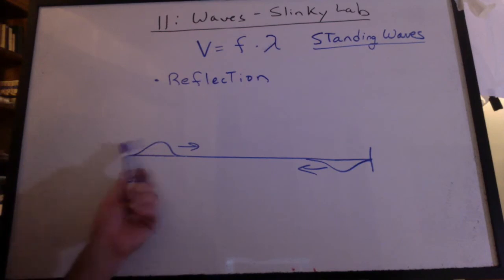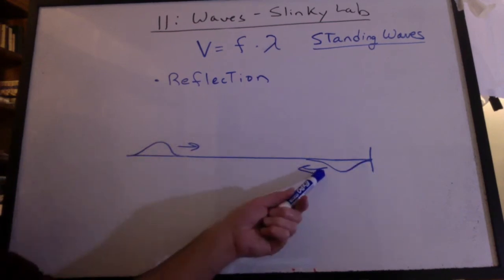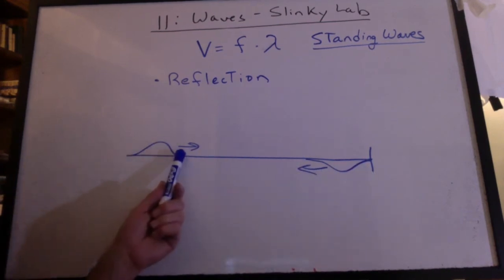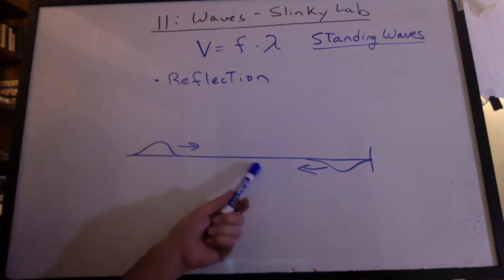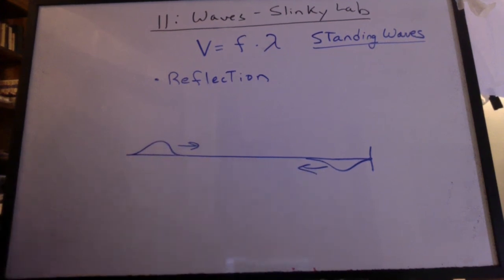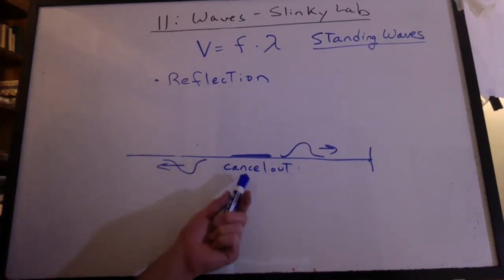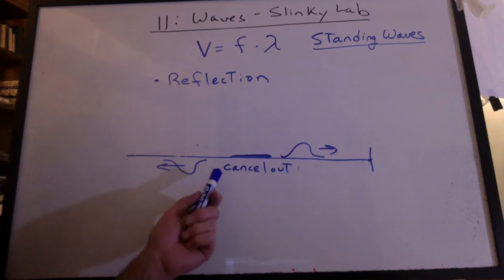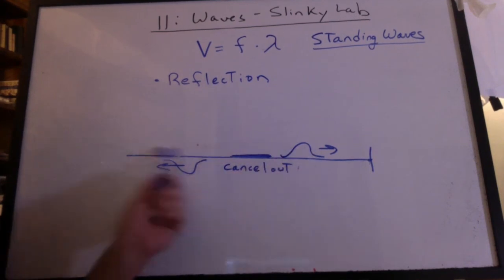So what happens if we send the wave down, it reflects upside down, and then we send the second wave? Now we have a crest and a trough. What's going to happen when they meet in the middle? They're going to cancel out. But only while they're overlapping. You add the heights. They later emerge and continue on.